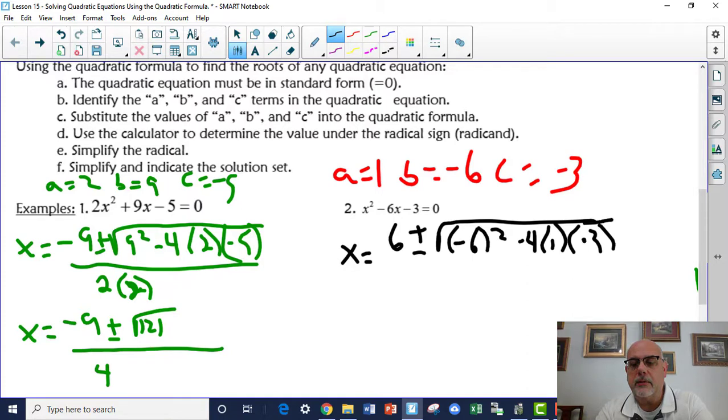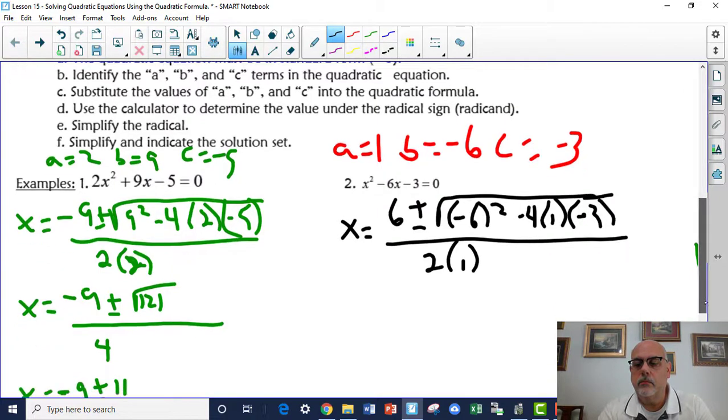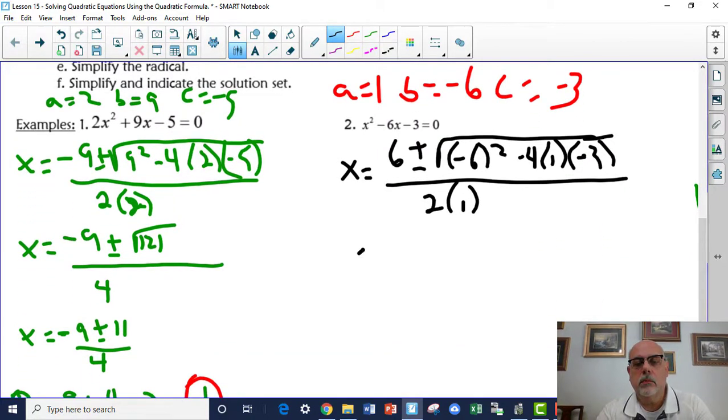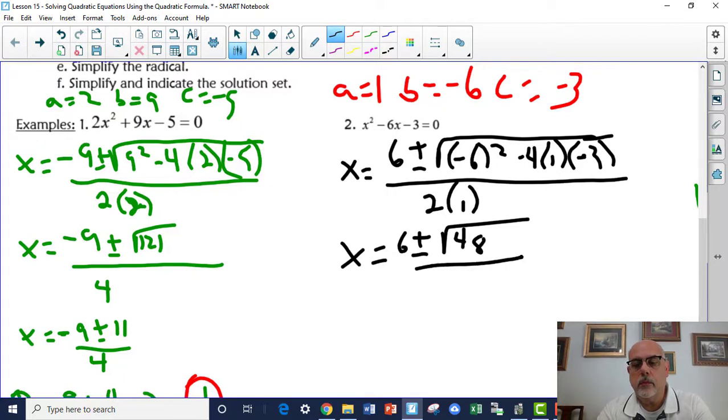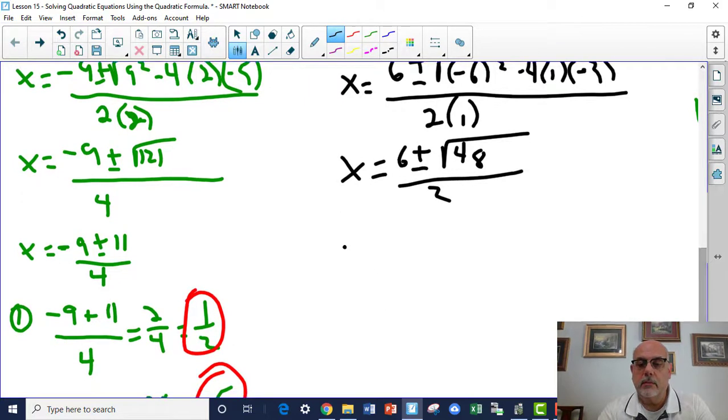So you've got a double negative here, negative 4, negative 3, all over 2 times 1. So x is equal to 6 plus or minus the square root of, when you put all that under the radical sign, you get 48 over 2. We simplify square root of 48: 6 plus or minus 4 radical 3 over 2.